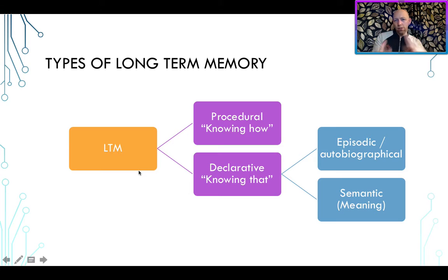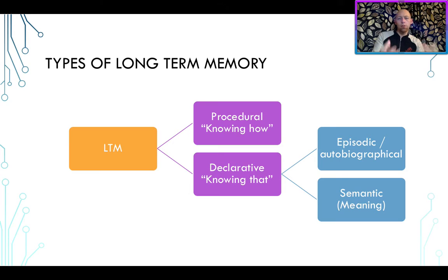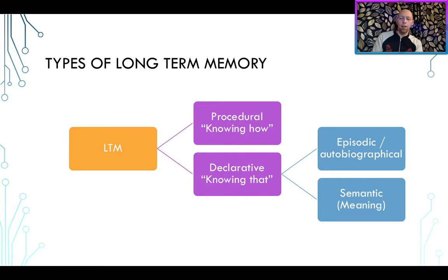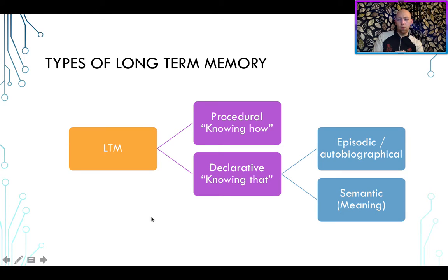This is a model of the distinction between different types of long-term memory. One thing we definitely know about long-term memory is that it's not a unitary store — it's not one big store in which everything is coded or treated the same way. In fact, we have multiple memory systems in long-term memory, and it depends on the type of experience you're trying to remember and encode. The main distinction is between two systems: procedural memory and declarative memory.